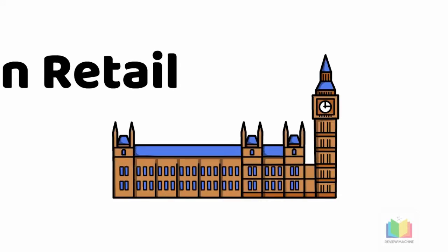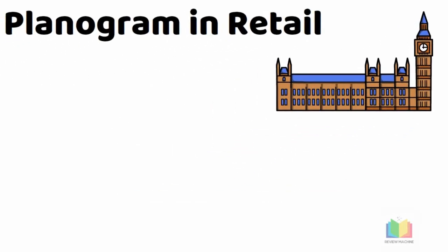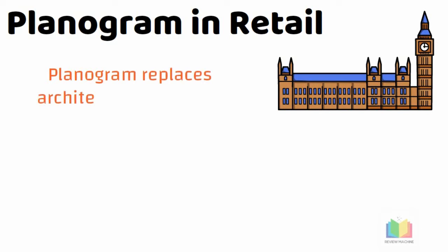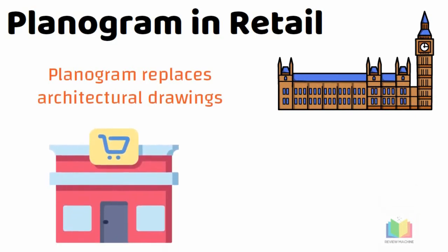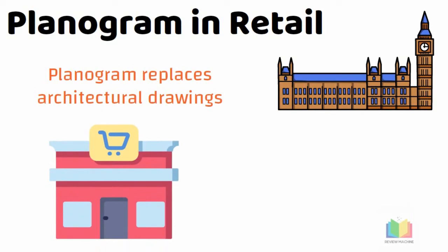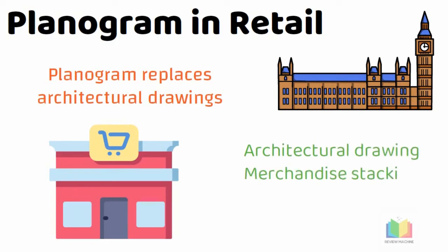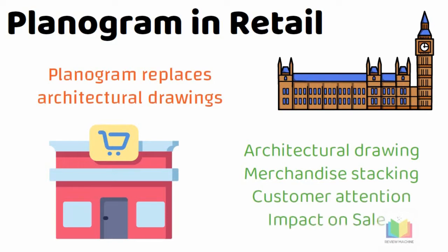We all know that buildings are constructed with the help of architectural drawings. So in retail, a planogram replaces architectural drawings. When a retailer opens any new store, he should have an exact plan of picture placement and product placement in the store. The planogram comes into the picture and will help in product placement and picture placement activity. The planogram can be defined as the architectural drawing which will help the retailer to understand where the merchandise has to be stocked in order to catch the customer's attention and make maximum impact in the sales.